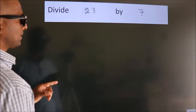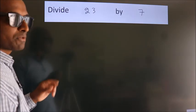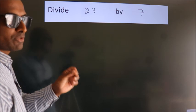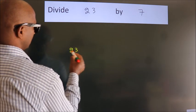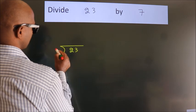Divide 23 by 7. To do this division, we should frame it in this way: 23 here, 7 here.